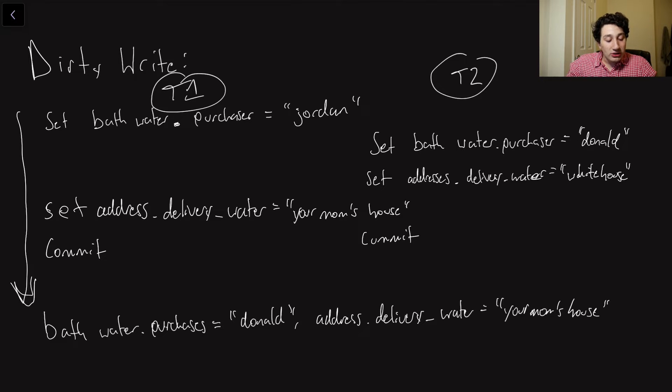So our bathwater.purchaser, T1 is basically me. I am going to go ahead and try and purchase some bathwater. So I'm setting the purchaser to Jordan. At the same time, our former president, Donald Trump, is also trying to purchase the same bathwater. We have similar taste in women. And so he is going to go ahead and set bathwater.purchaser to Donald. Makes sense.